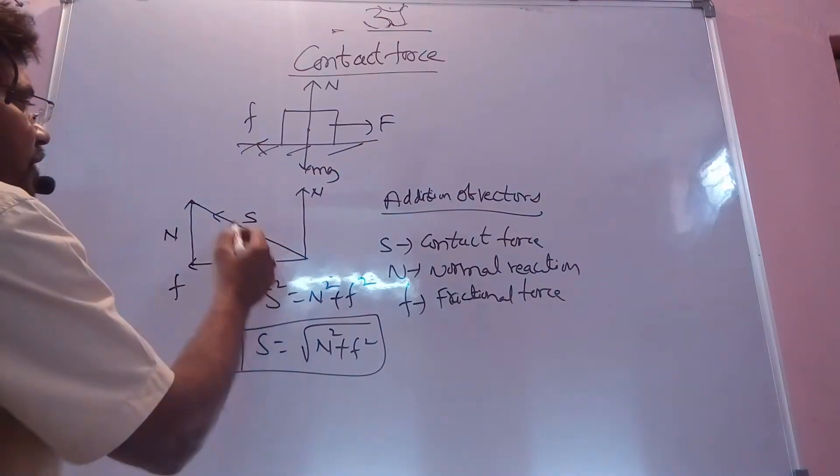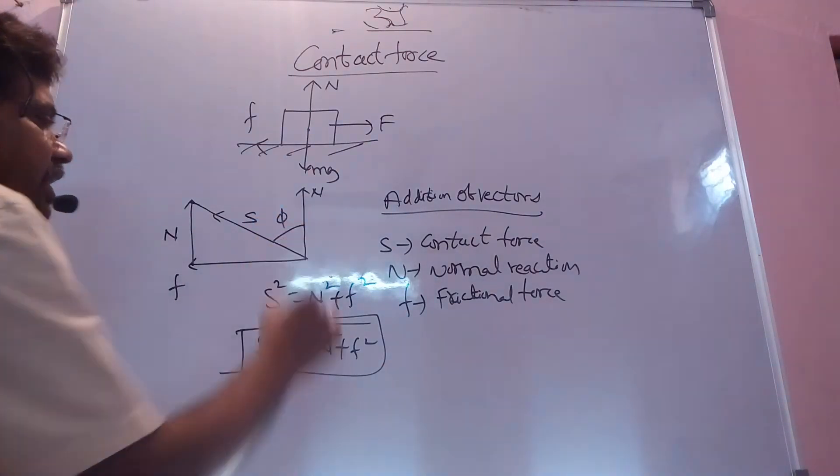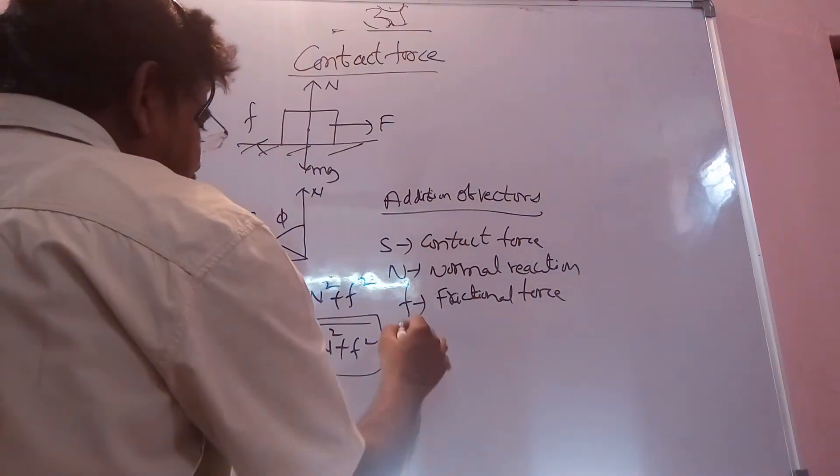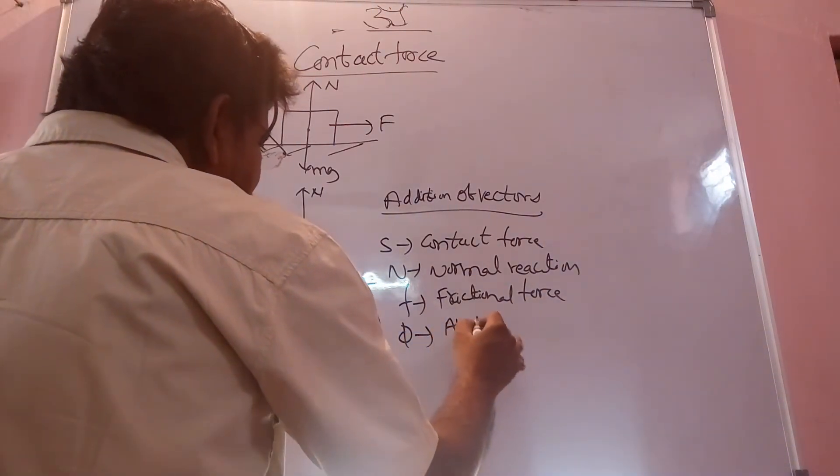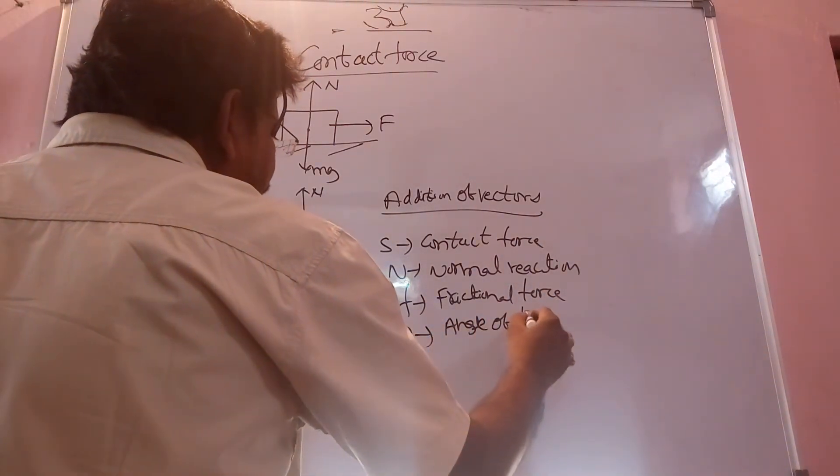The angle between contact force and the normal reaction, we are taking as angle of friction. So what is π? π is called angle of friction.